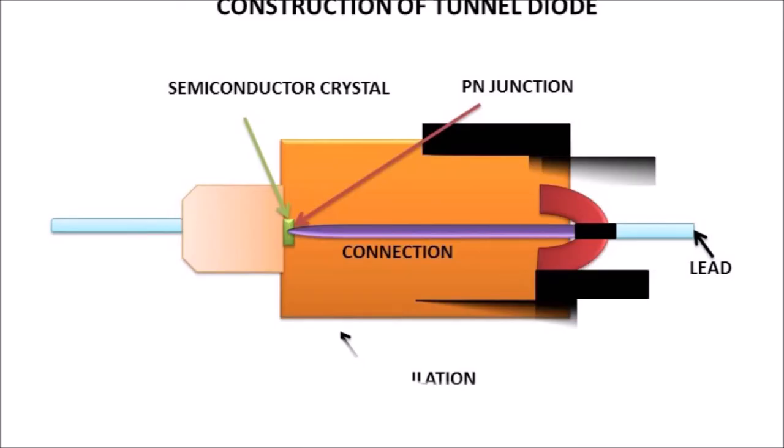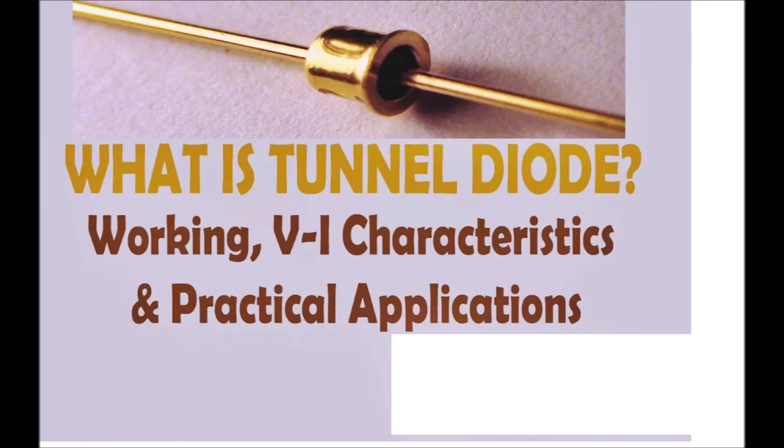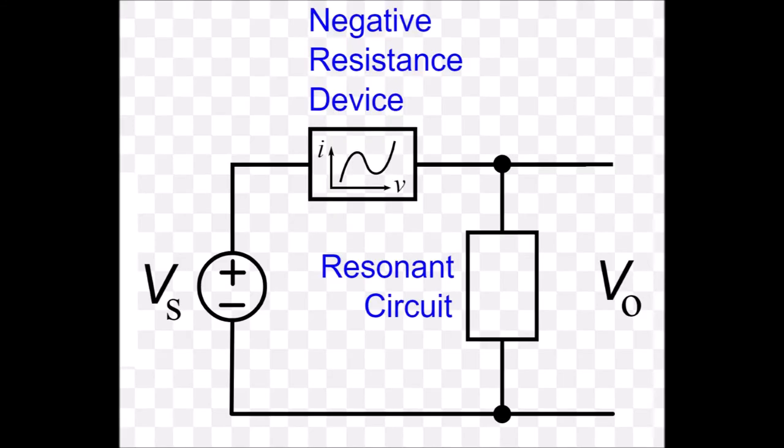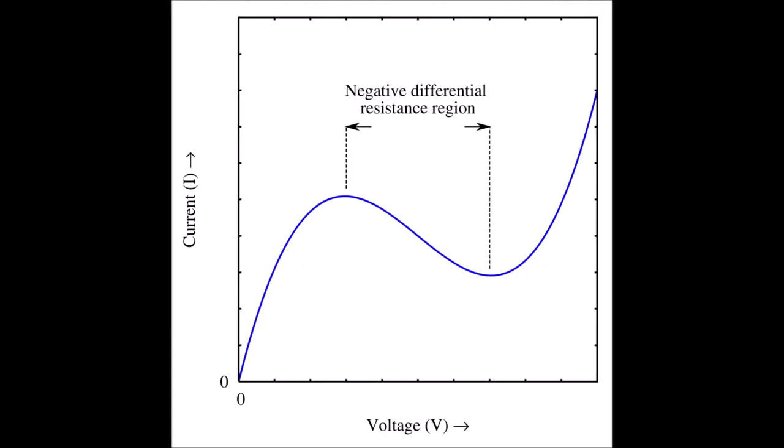Tunnel diode, or Esaki diode. A tunnel diode or Esaki diode is a type of semiconductor diode that has negative resistance due to the quantum mechanical effect called tunneling. It was invented in August 1957 by Leo Esaki, which is a Japanese name. And that company, with some of the other gentlemen that designed that, maybe women I don't know, is now called Sony. Negative resistance. In electronics, negative resistance (NR) is a property of some electrical circuits and devices in which an increase in voltage across the device's terminals results in a decrease in electric current through it.